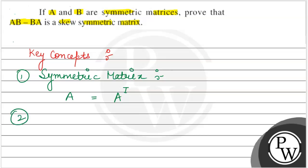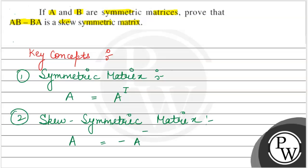The second key concept used is the skew symmetric matrix. In the case of a skew symmetric matrix, A is equal to negative of A transpose.